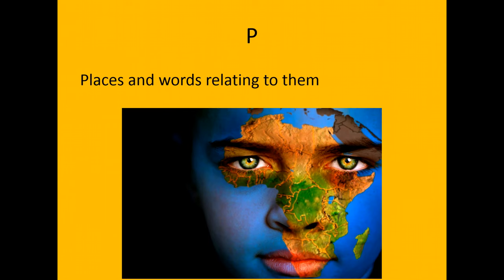The P in ABLE PRINTS stands for places and words relating to them. So Africa gets a capital A, and African also gets a capital A.